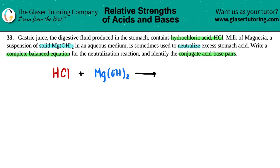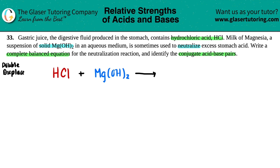So it looks like there are two compounds here. When we think of two compounds reacting with each other, it doesn't matter whether it's a titration or a neutralization — this is just a double displacement reaction. Double displacement, we learned this all the way back in the beginning of chem. Double displacement is when you have two compounds coming together.